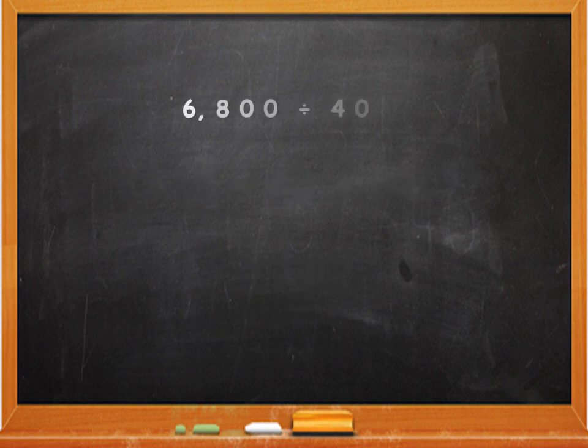The next example is 6,800 divided by 40. You can see that the dividend has two 0s while the divisor has only one 0. Remember that important point? Even if there are two 0s in the dividend, if there is only one 0 in the divisor, you can cancel only one 0.